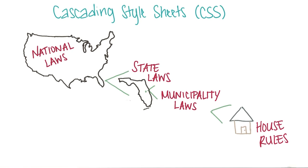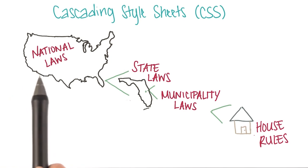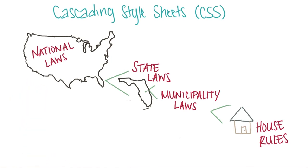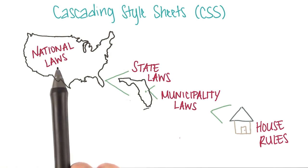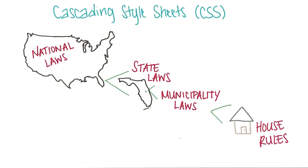So your house rules would actually be the same as the national laws. Wouldn't this be awesome if this was true in real life? For example, I went to school in Orlando, and I made it a rule that we did theme park Mondays — meaning if I had time on Monday, I went to the theme park. It was a house rule. Wouldn't that be great if it was national law? I could go to a theme park every Monday.